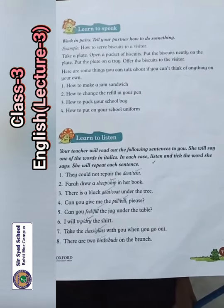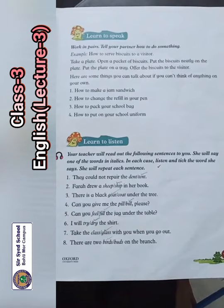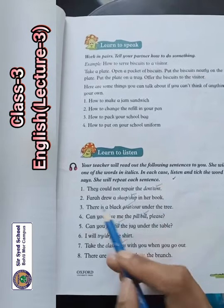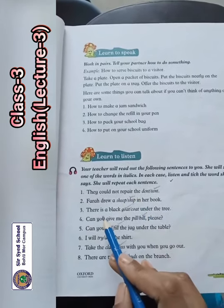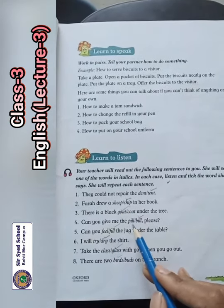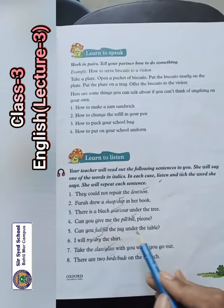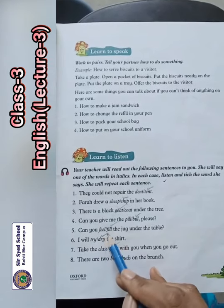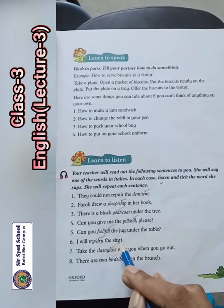Now come towards page number nineteen. Your teacher reads out the following sentences. She will say one of the words in italics — listen and tick the word she says. She will repeat each sentence. They could not repair the dent or tent — you put a tick on tent. Farah drew a ship in her book — tick ship. There is a black goat or coat under the tree — tick goat. Can you give me the pill or bill please — tick bill. Can you fill the jug under the table — tick fill. I will try to dry the shirt — tick dry. Take the glass with you when you go out — tick glass.